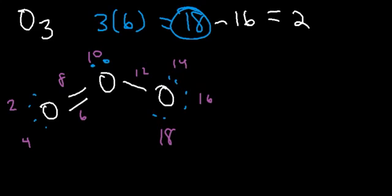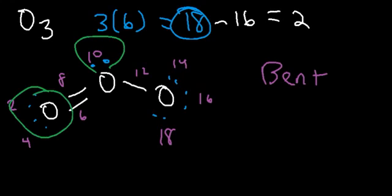And notice that it has a bent molecular geometry. This oxygen has one lone pair and it's attached to two other oxygen atoms. And its bond angle is very close to 120.